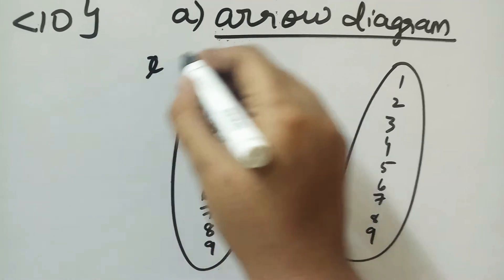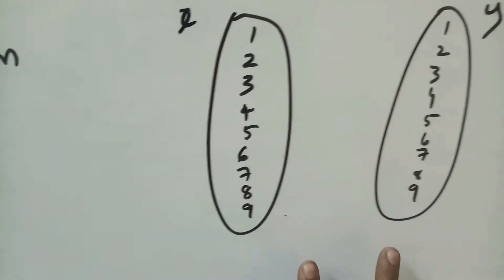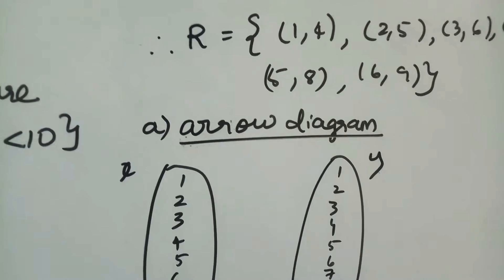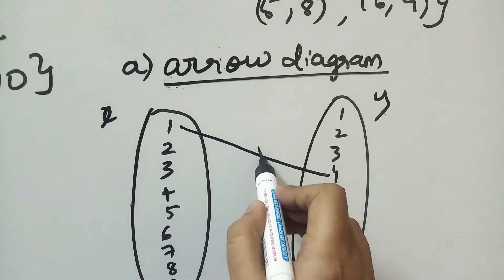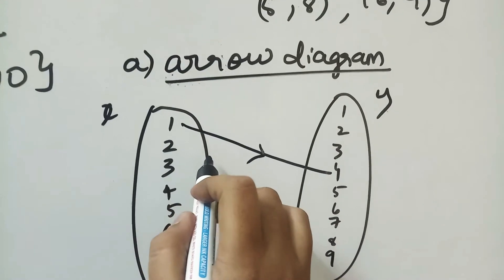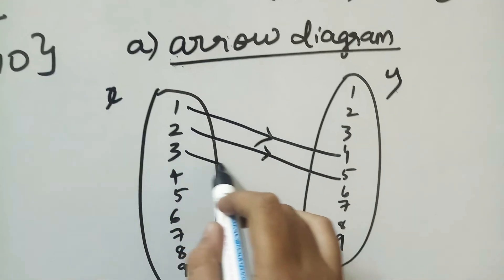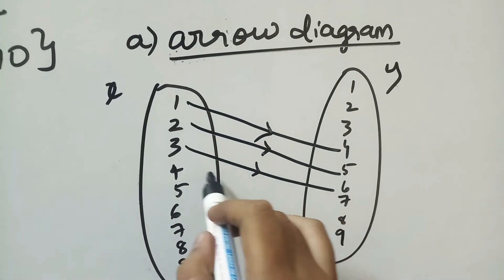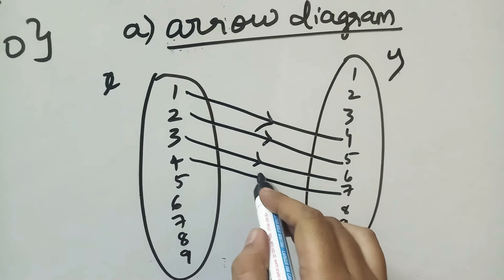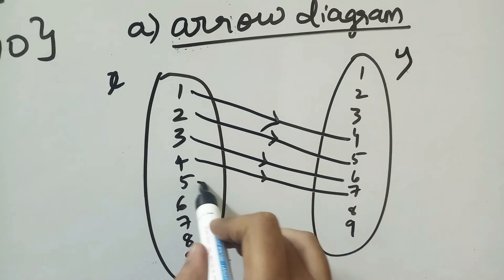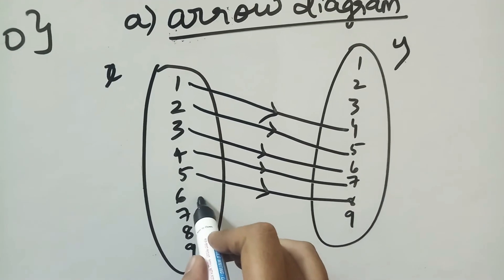So x and y are natural numbers less than 10, and we have 9. We have relation 1 to 4, 2 to 5, 3 to 6, 4 to 7, 5 to 8, 6 to 9.